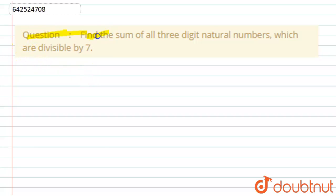Here we have been given: find the sum of all three-digit natural numbers which are divisible by seven. Okay, so let's start with this solution.